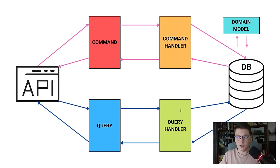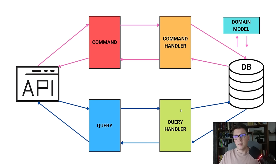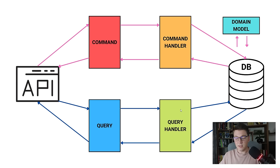A couple of things to point out here. You can see in this diagram that I have only one database. You might have heard that CQRS requires a read and write database, event sourcing, and all of that complexity — but this is simply not the case. You are fine with just one database for both writes and reads. If the time comes to scale your application, then you can think about separate read and write databases and event sourcing. But to start out, one database is perfectly fine, and this is the approach I'm going to show you.